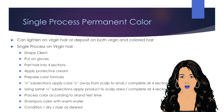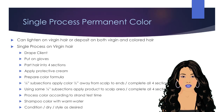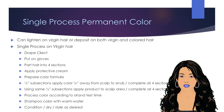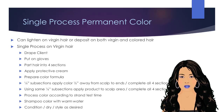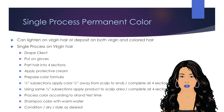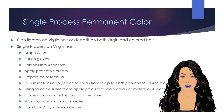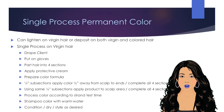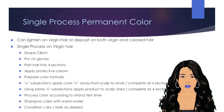Begin by draping the client for a chemical process. Put on gloves. Part the hair into four uniform sections. Apply protective cream around the hairline to prevent the color from staining the skin. Prepare your color formula. Using ¼ inch subsections, apply the color ½ inch away from the scalp and down to the hair ends. Complete all four sections. Using the same ¼ inch subsections, go back through each quadrant and apply the product to the scalp area, completing all four sections.